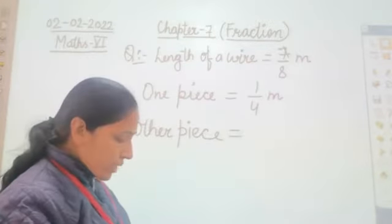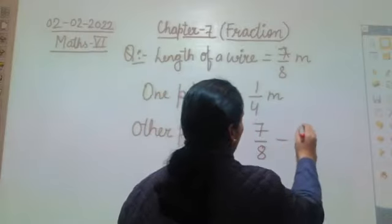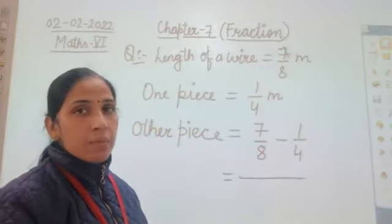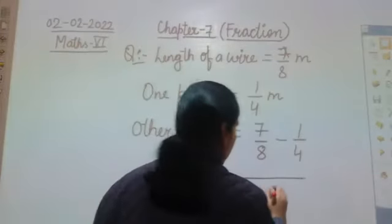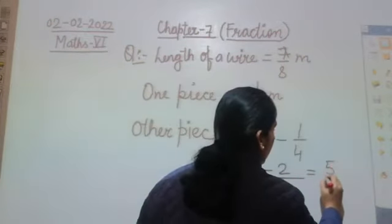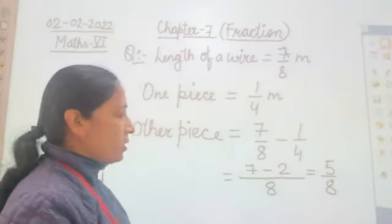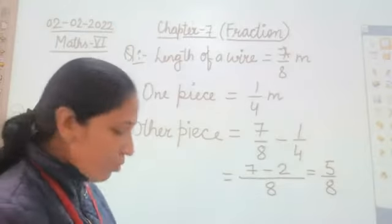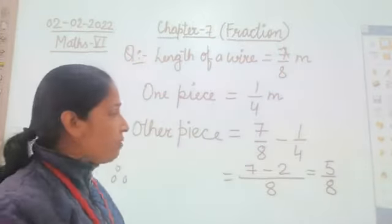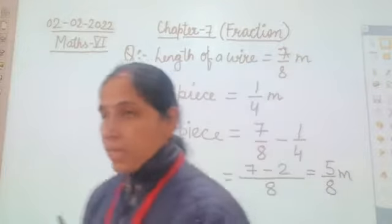So we calculate 7/8 minus 1/4. Find the LCM of 4 and 8, which is 8. So 7/8 minus 2/8 equals 5/8. Therefore the length of the other piece of the wire is 5/8 meter.